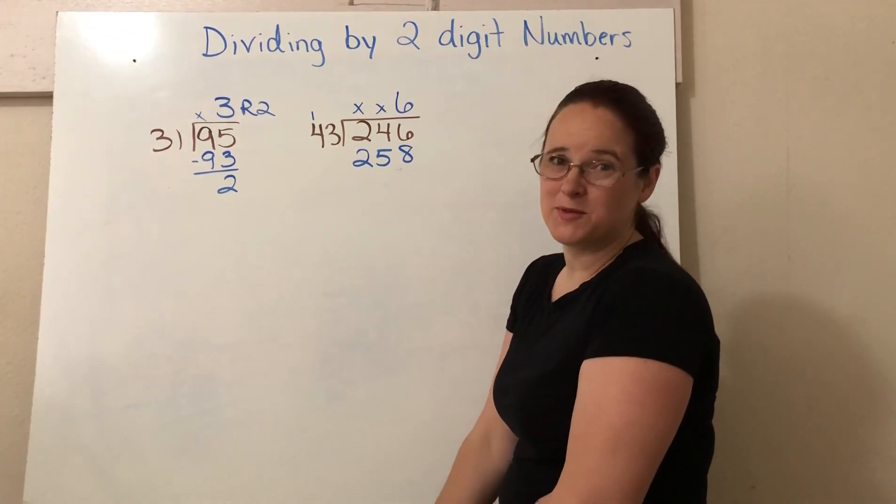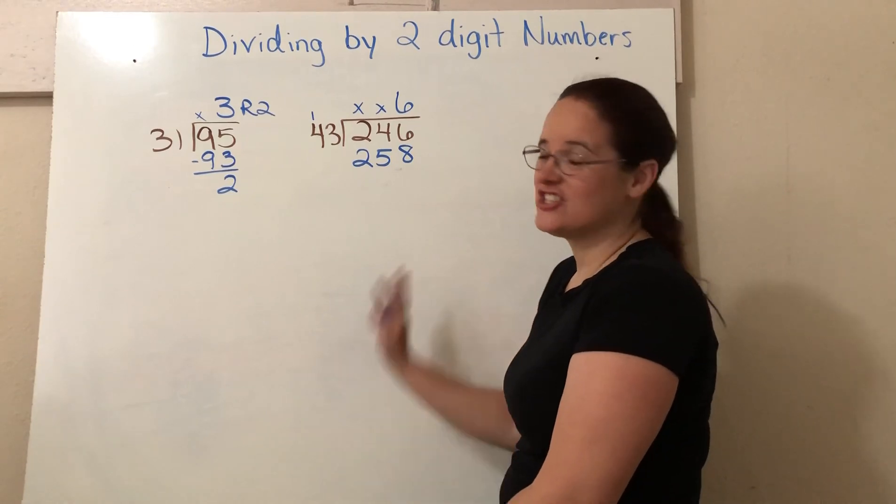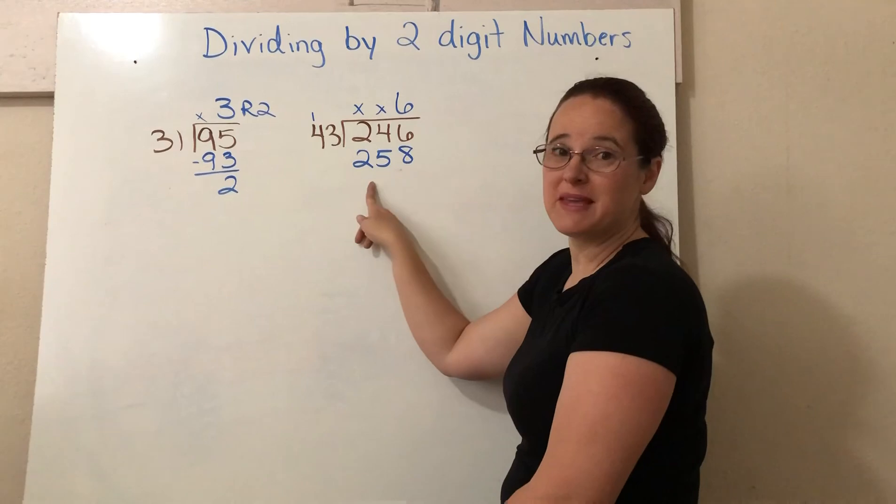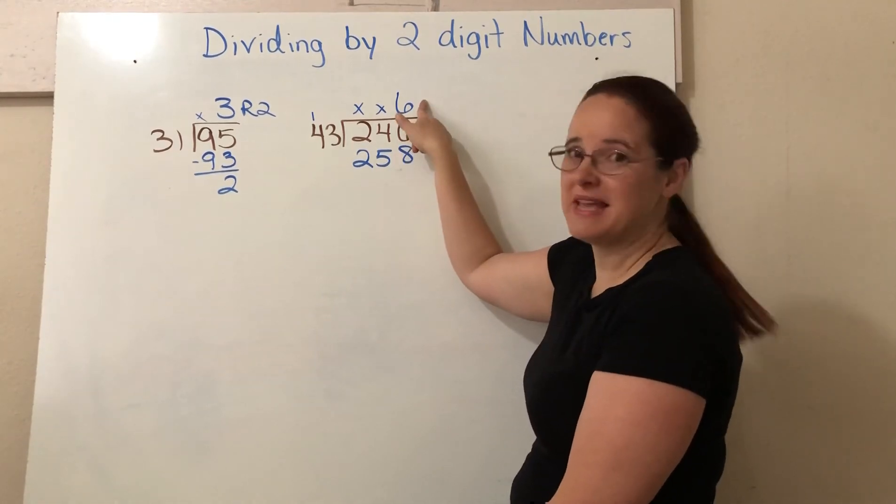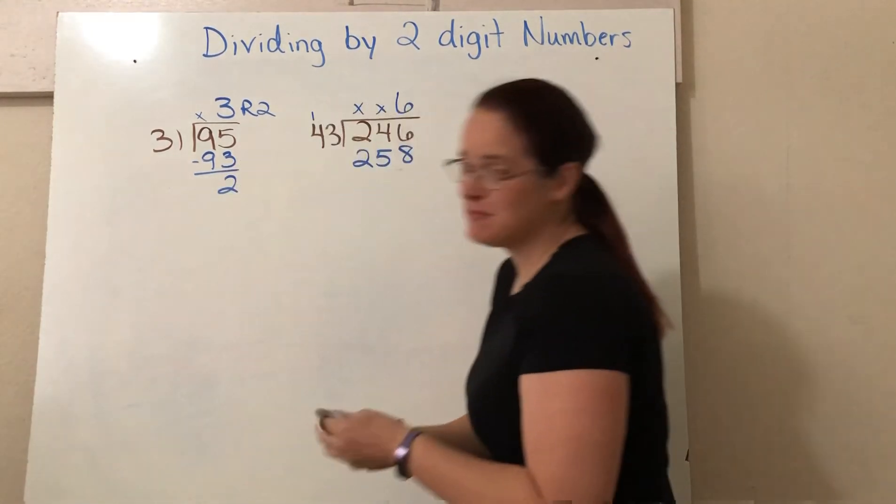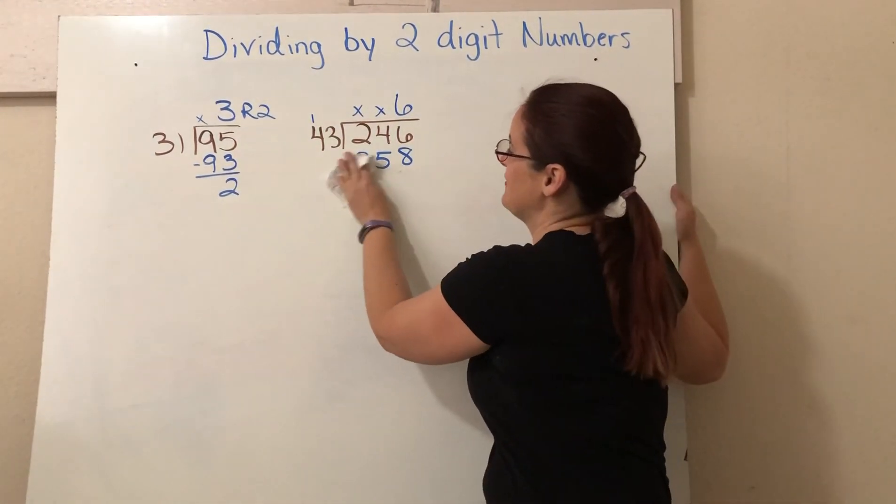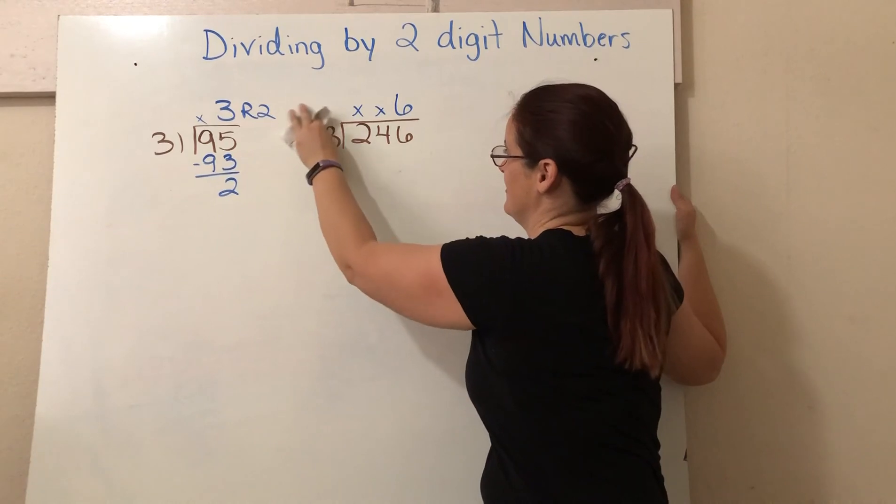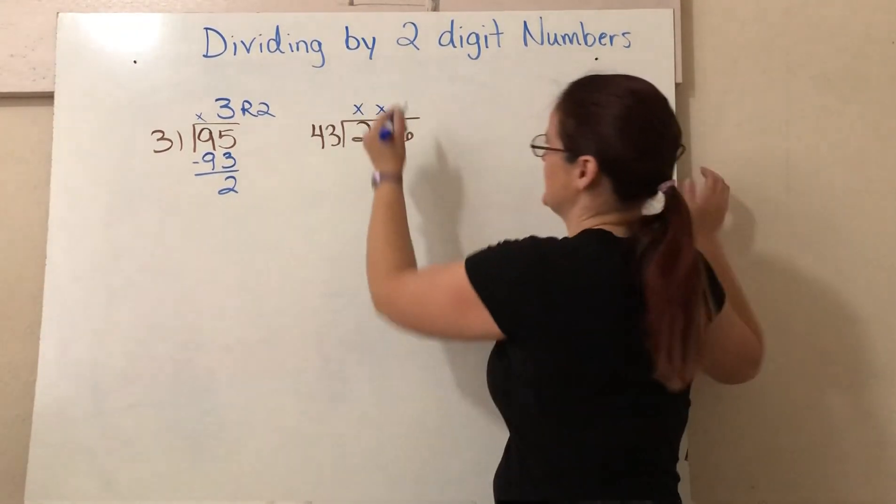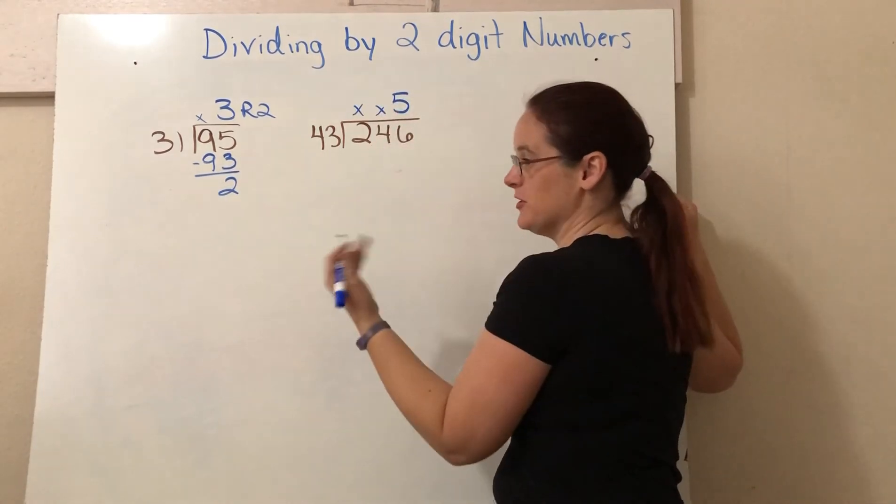So sometimes when we're using this estimation strategy, this happens and we go, uh-oh, this number's bigger. That means I can't make six groups of 43. But I have some good information here because if I can't make six groups, I can definitely make five because I wasn't that much over. So instead of a six, we'll do a five and then we multiply again.